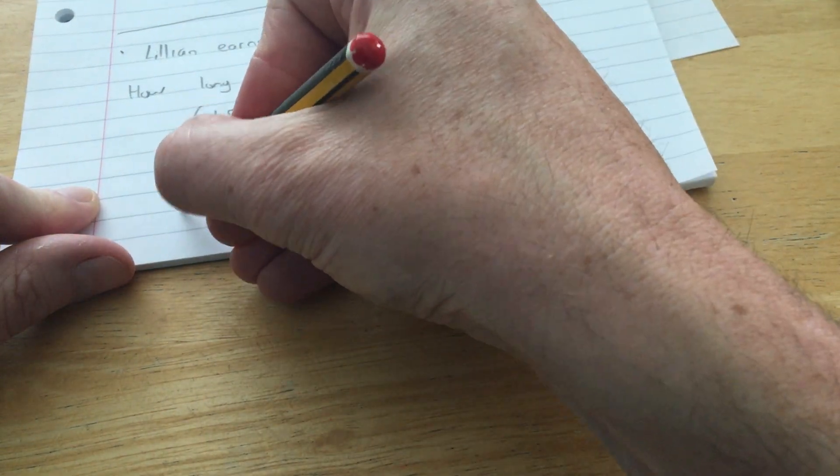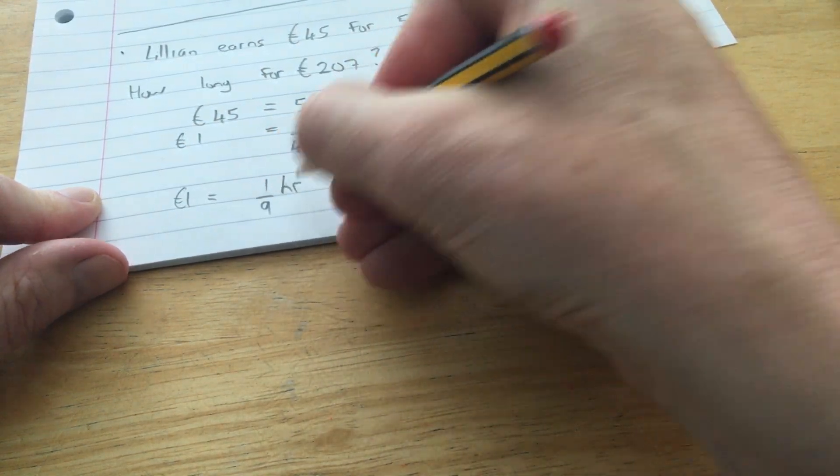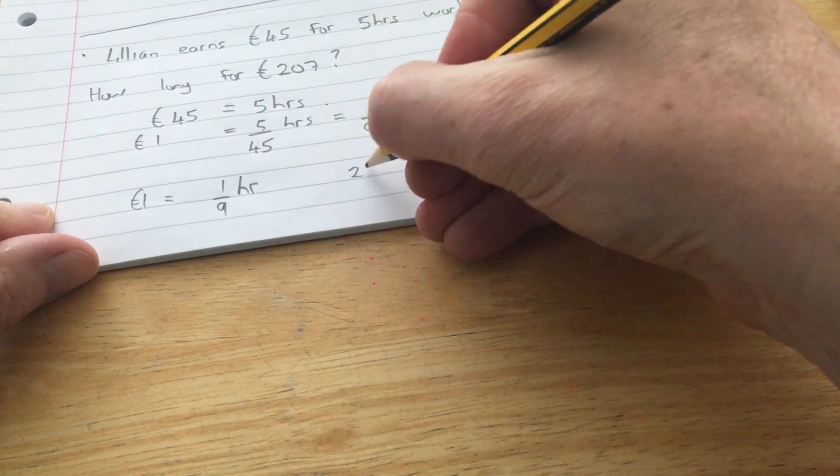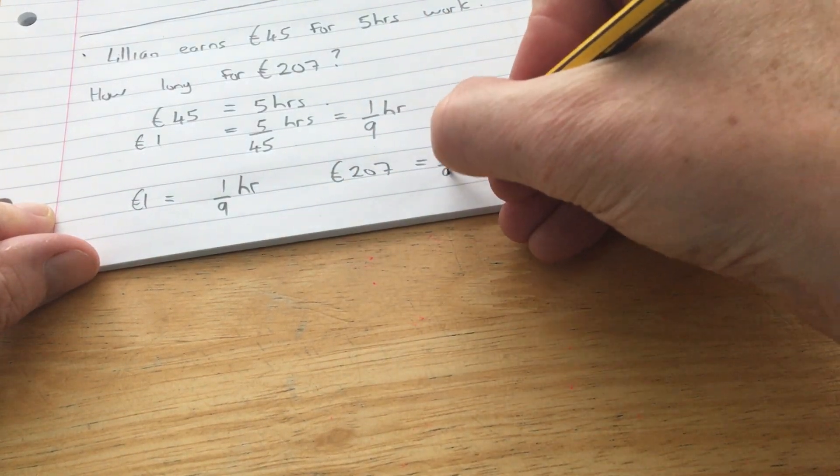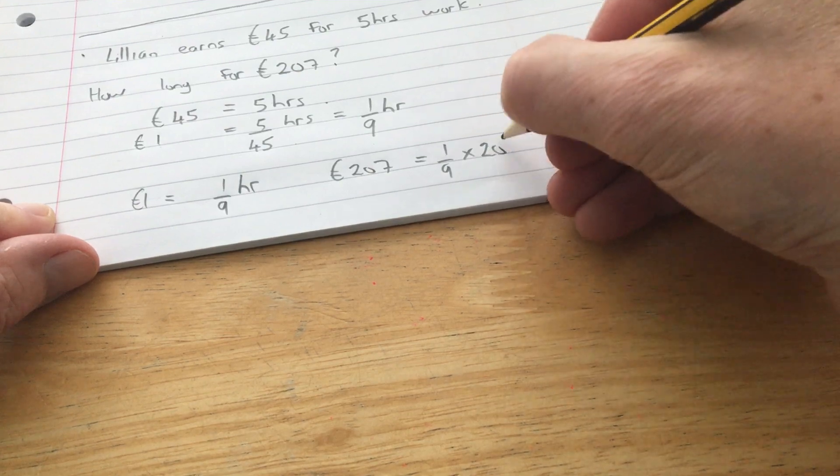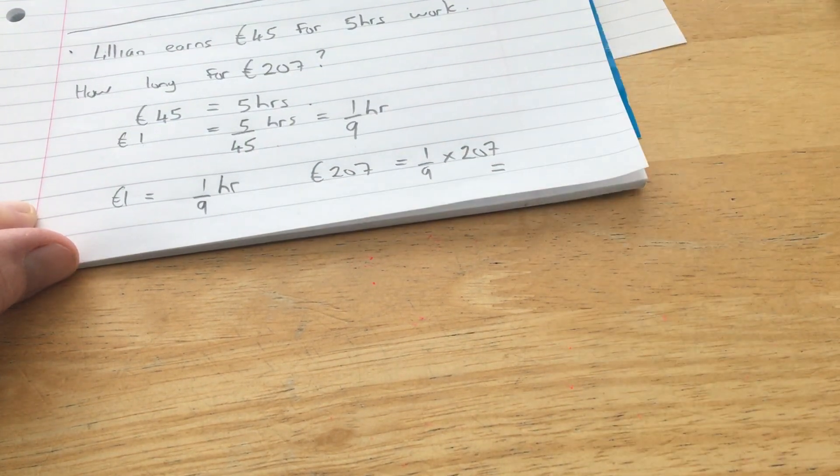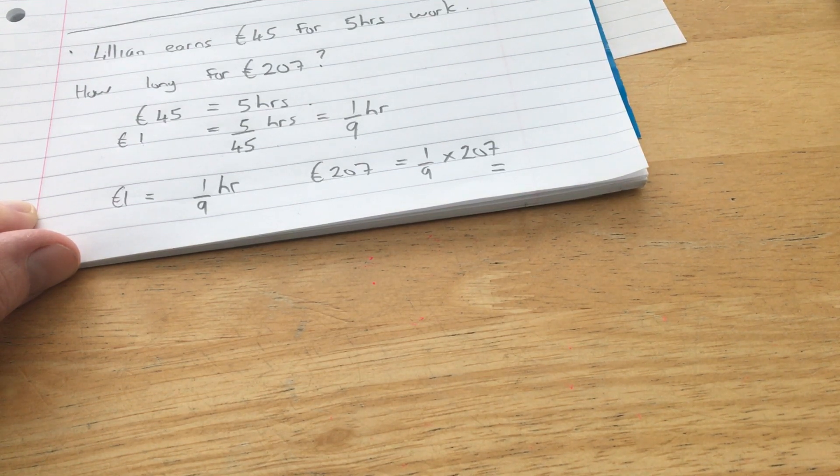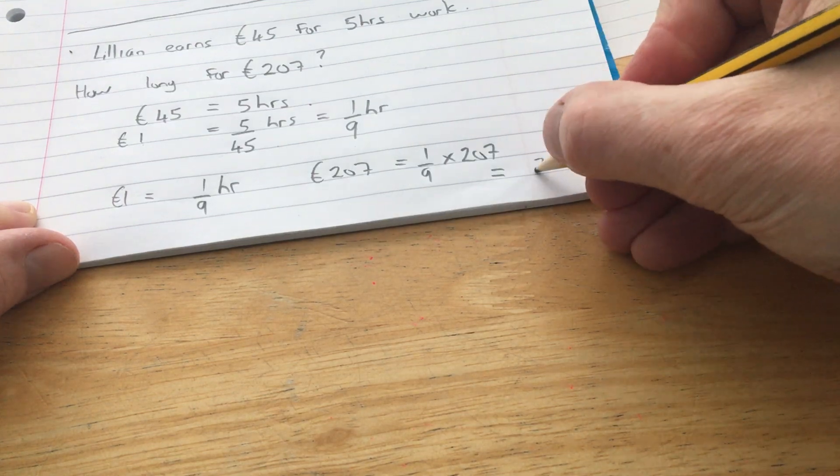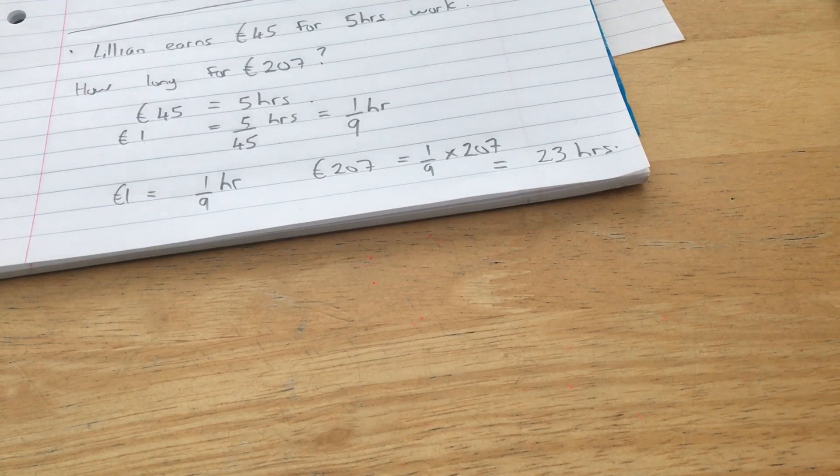If 1 euro equals a ninth of an hour, then 207 euro will be a ninth of an hour multiplied by 207, which equals 23 hours. So find out how long it takes to earn 1 euro and then work from there.